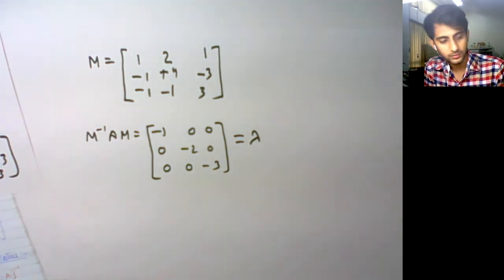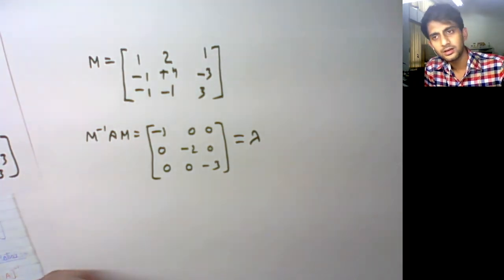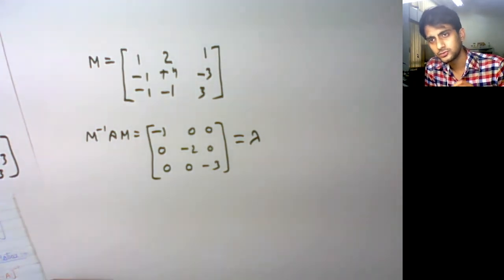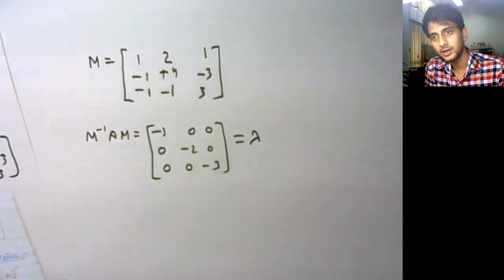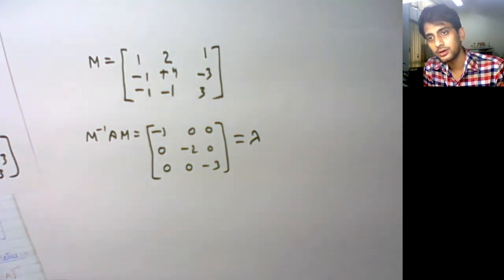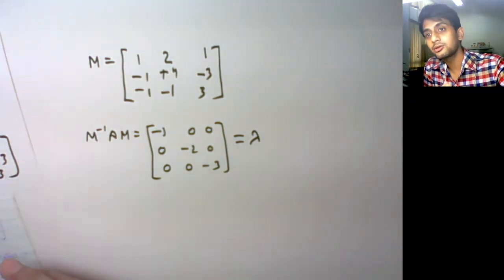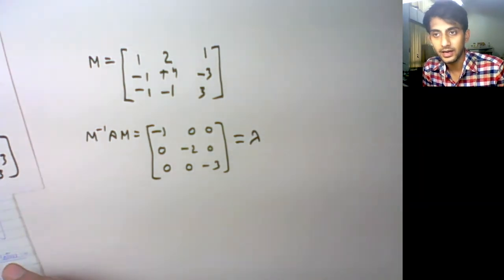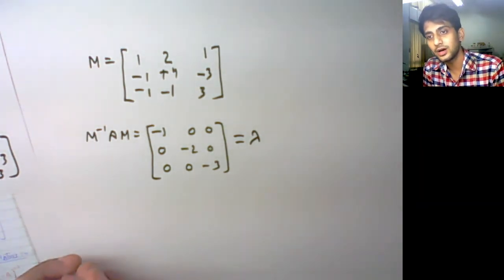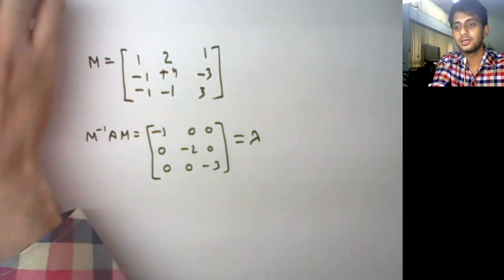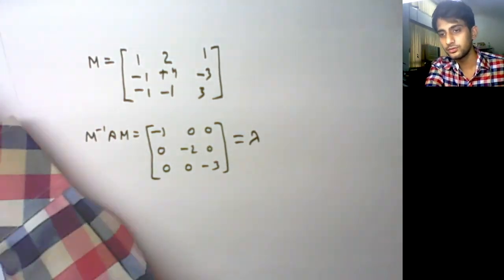We will now assume a two-by-two system so that calculations are easier, and try to find out how, depending on the nature of eigenvalues, we can infer something about the stability of our system. Thank you all so much.